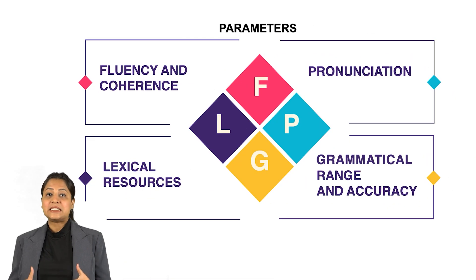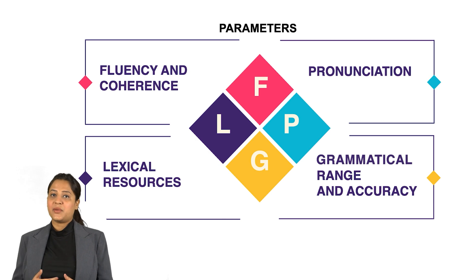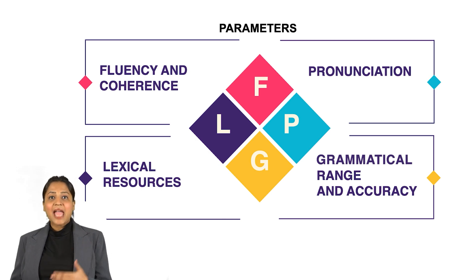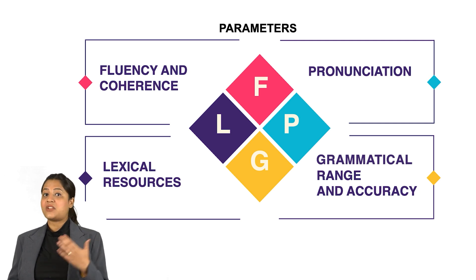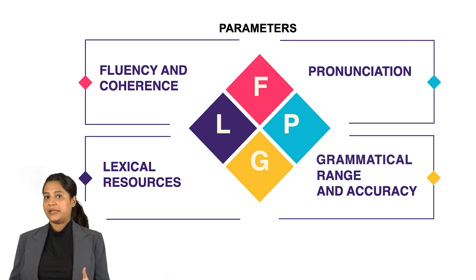Finally comes grammatical range and accuracy. This parameter checks if the candidate is able to express their ideas using a range of sentence structures accurately. If somebody wants to get their desired band score in speaking, they just need to work on these four parameters. Hope you found this video helpful. Thanks for watching.